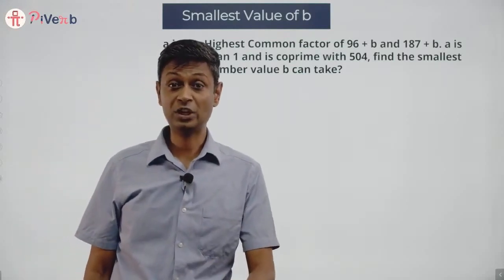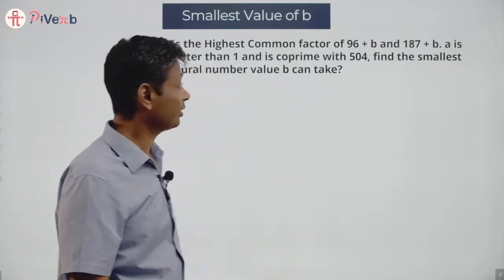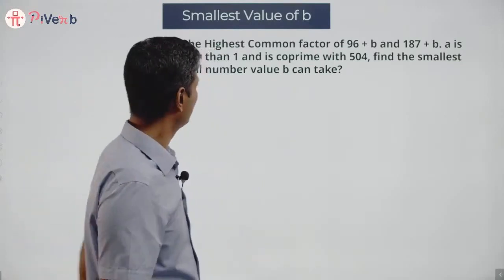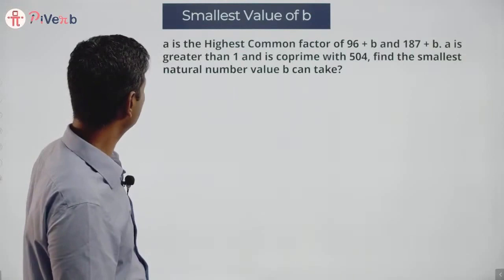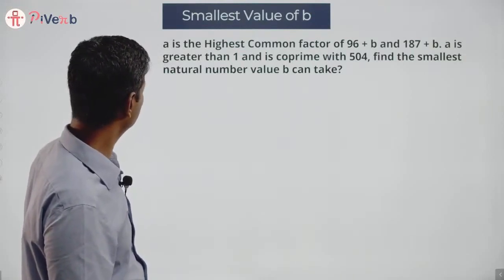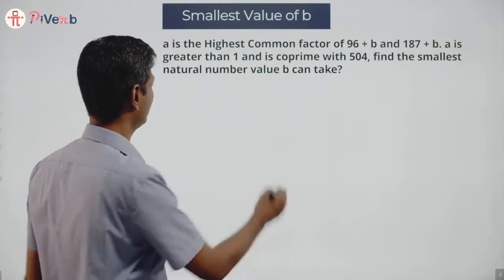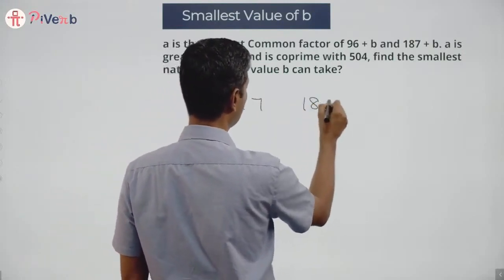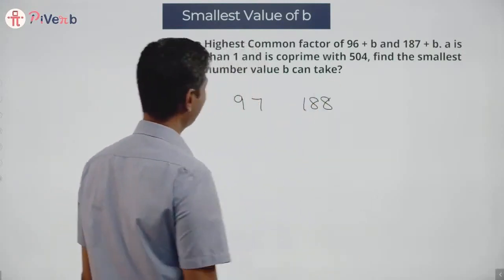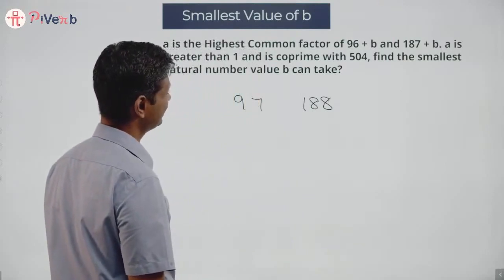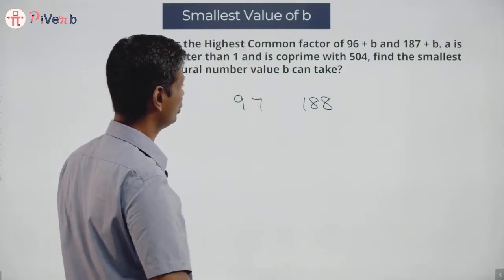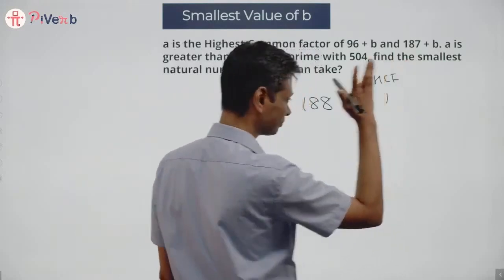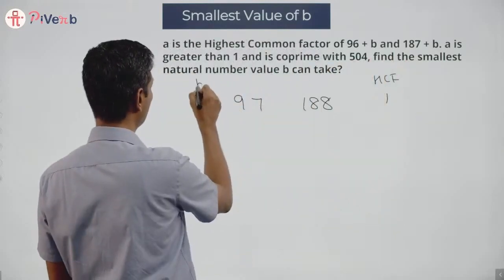A and B are natural numbers, and A is the HCF of those two numbers. Let me start by putting a value for B. I'll put B equal to 1, which means I'm looking at 97 and 188. 97 is prime, and 188 is 94 times 2. The HCF of these two numbers is 1.